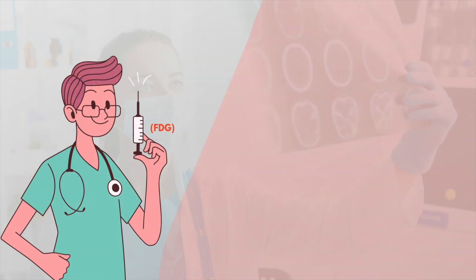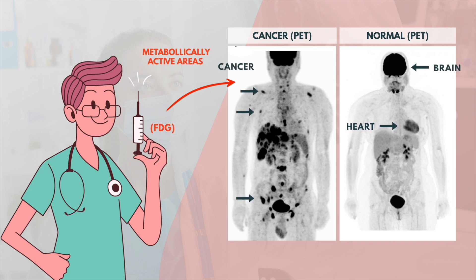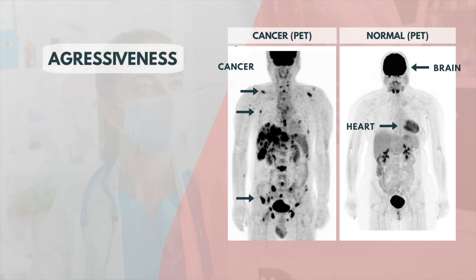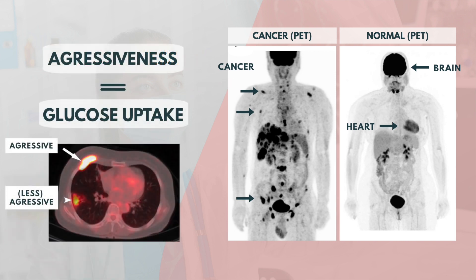When given to a patient, the body assumes that it is glucose. The FDG is sent to metabolically active areas in our body, such as the heart, the brain, but also cancer cells. In fact, the degree of aggressiveness for most cancers is roughly paralleled by their rate of glucose uptake.